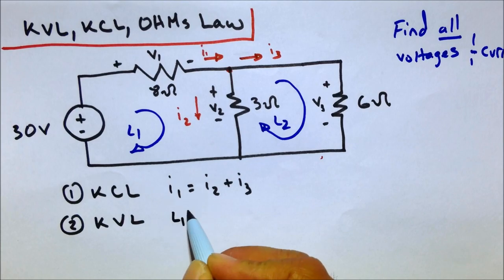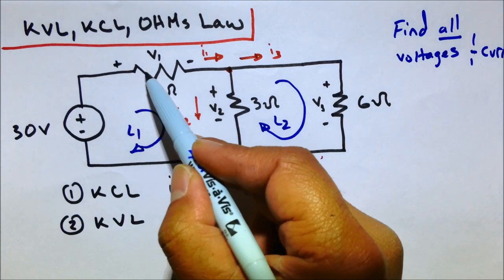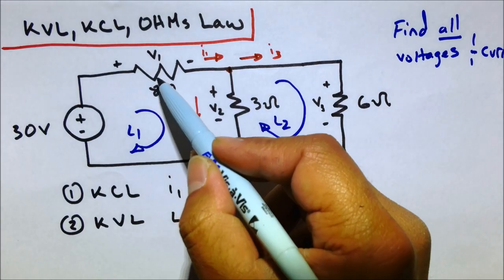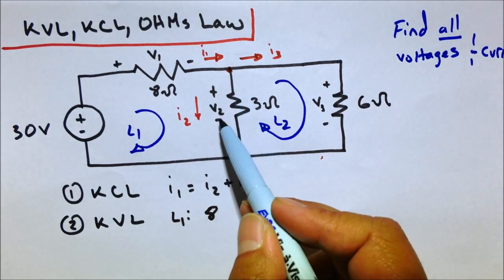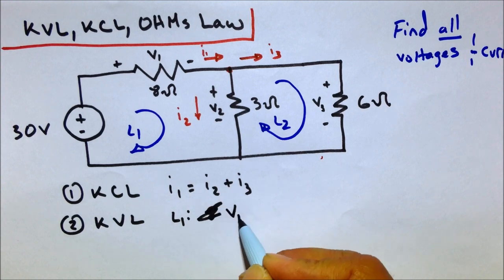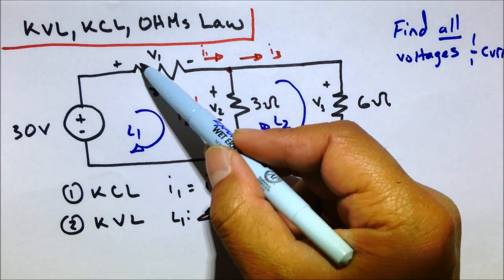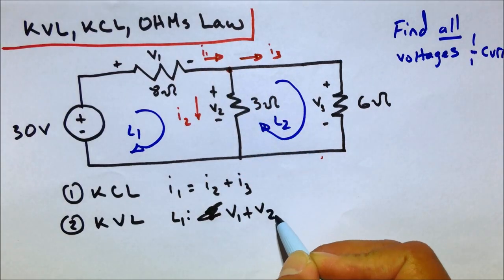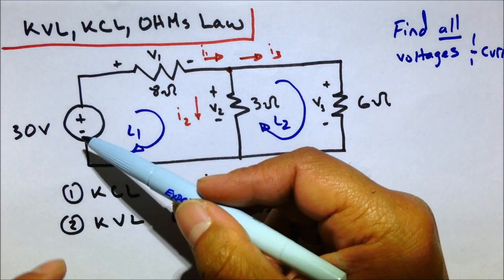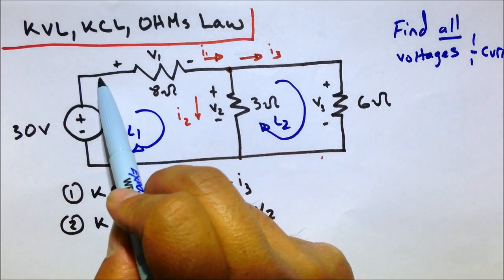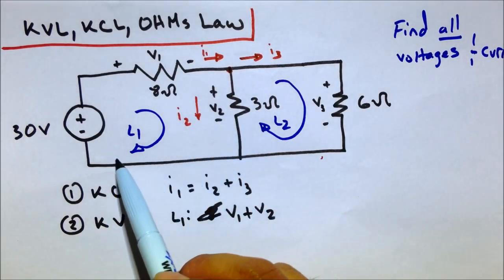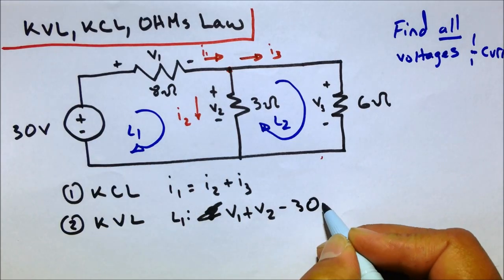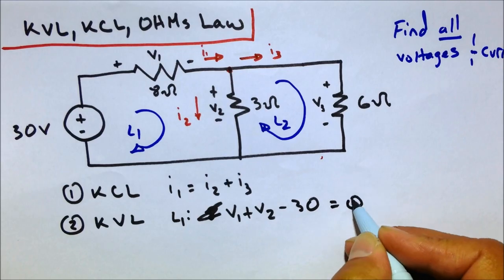So loop one, if we go around this way, we have V1, and then going down this way we have V2, and then going up this way the polarity is different now. Remember, positive to minus, positive to minus, and then minus to positive, so that means you have to subtract that 30 volts. And we know that equals to zero.